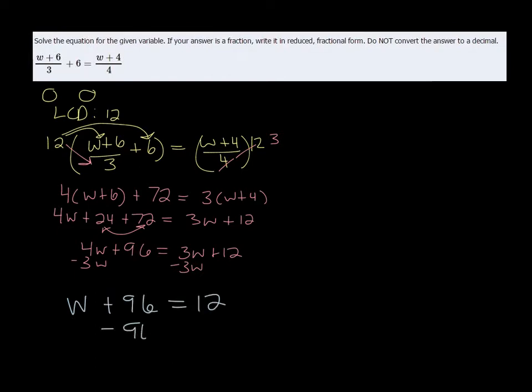And I can subtract 96 on both sides. And I get that W is equal to 12 minus 96, which is negative 84.